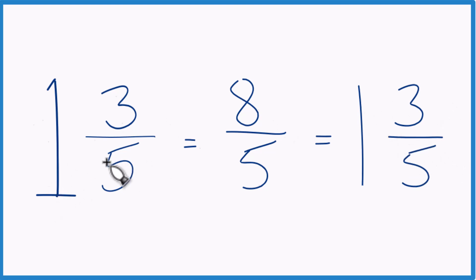That's what we started out with so we know we did it correctly. This is Dr. B writing the mixed number 1 and 3 fifths as an improper fraction. That answer is 8 fifths. Thanks for watching.